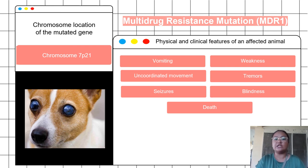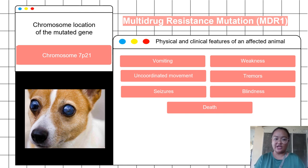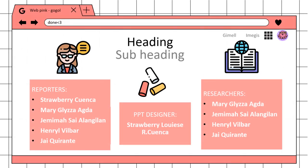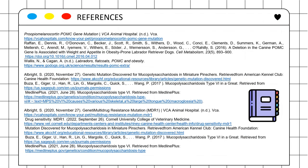The physical and clinical features of an affected animal include vomiting, uncoordinated movements, seizures, weakness, tremors, blindness, and death. That is all for our report. Thank you very much.